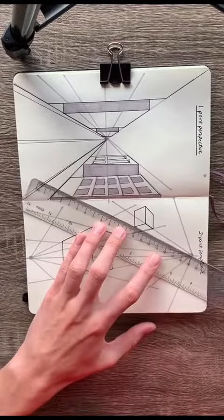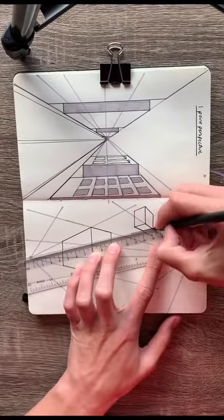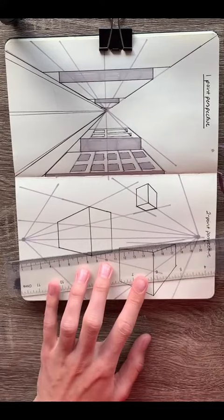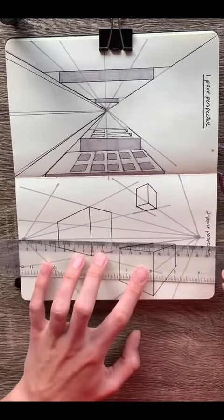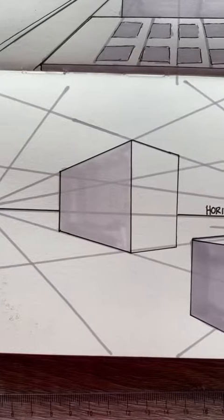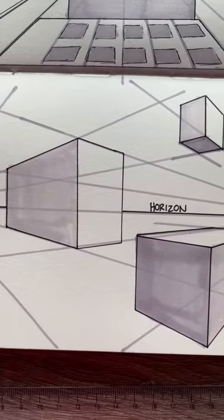Anything that's above the horizon line, you'll see the bottom of it, and anything that's below the horizon line, you'll see the top of it. Any object that goes in between the horizon line, you won't see the top or the bottom of it like this box on the left.